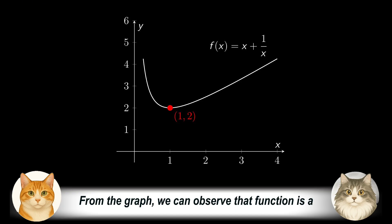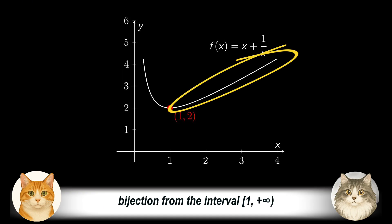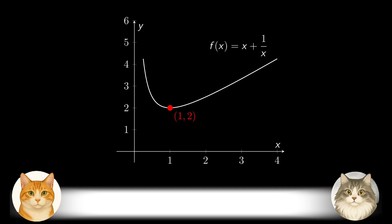From the graph, we can observe that function is a bijection from the interval 1 to positive infinity, onto the interval 2 to positive infinity, a statement that we proceed to prove right now.